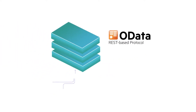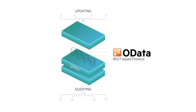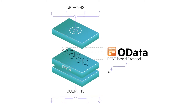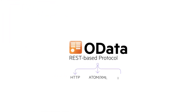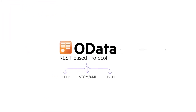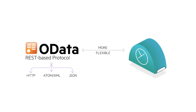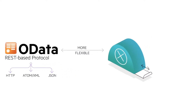OData is a REST-based protocol for querying and updating data. Built on technologies like HTTP, Atom, XML, and JSON, OData is more flexible than other REST-based web services.